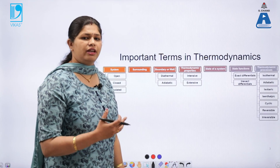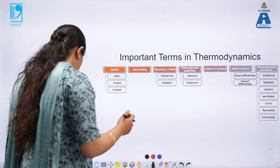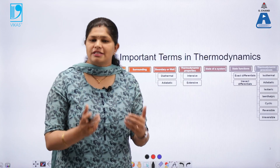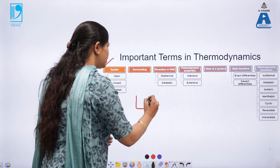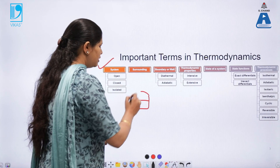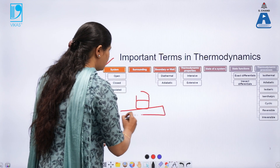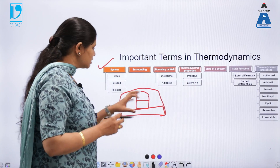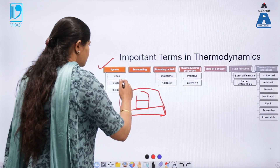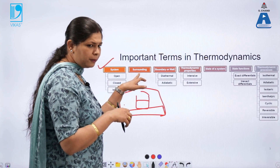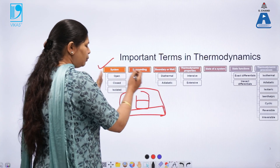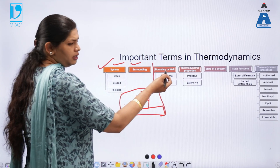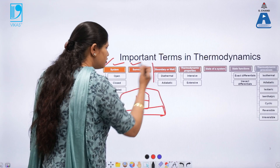Before building up the topic, you must understand various terms. The first term in thermodynamics is 'system.' A system is a part of the universe that is under consideration or investigation. If I am doing a reaction in a beaker, my beaker is the system. Whatever portion of the universe is under consideration is the system. The part of the universe that is not the system is called the surroundings — so the universe equals system plus surroundings. The boundary, or wall, is what separates the system and surroundings; it can be an imaginary wall or a real wall.